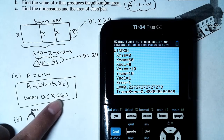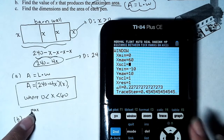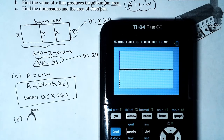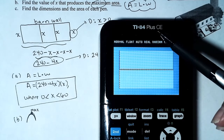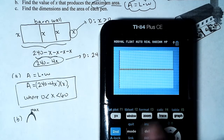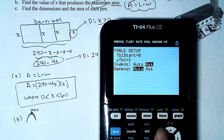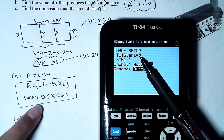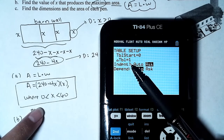After hitting graph I don't see a maximum yet, so I need to adjust the y-axis range. I'll check the table of values. Going to Second > Table Set, I'll set the table start to 0 and count by 1, and change the independent variable from Ask to Auto.